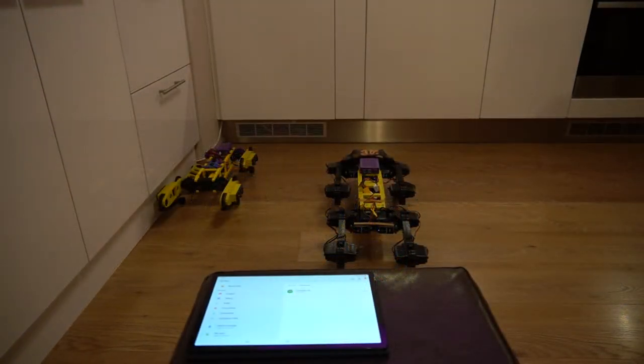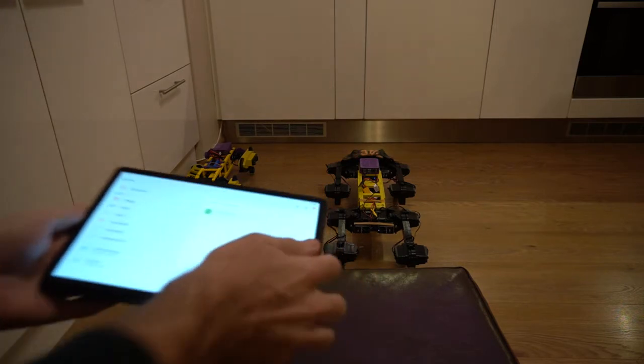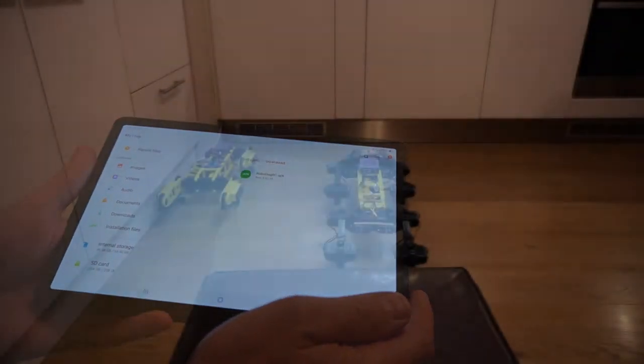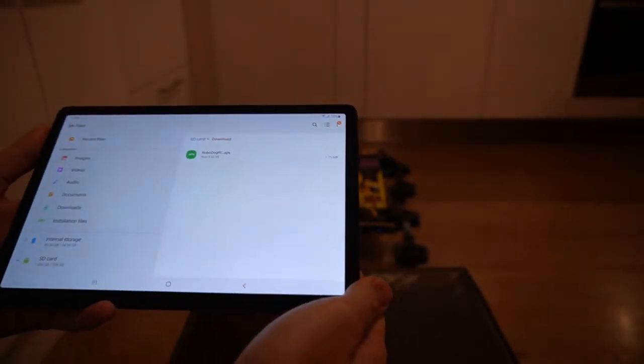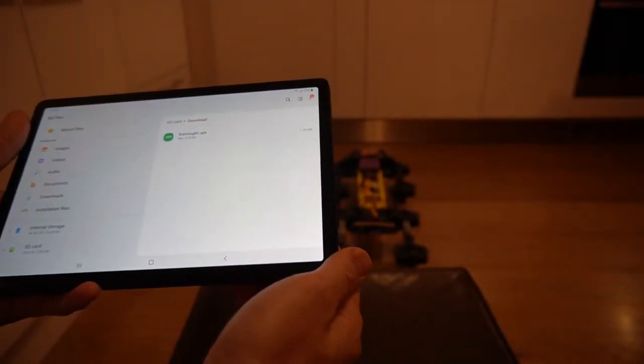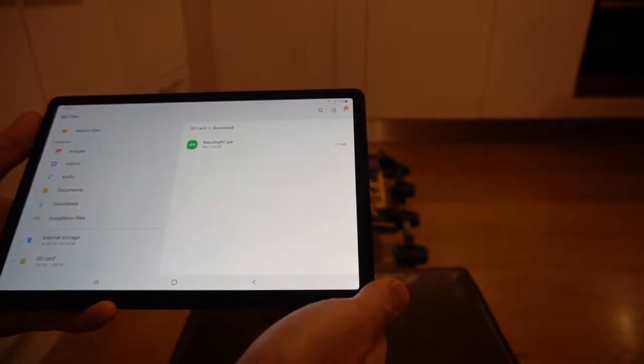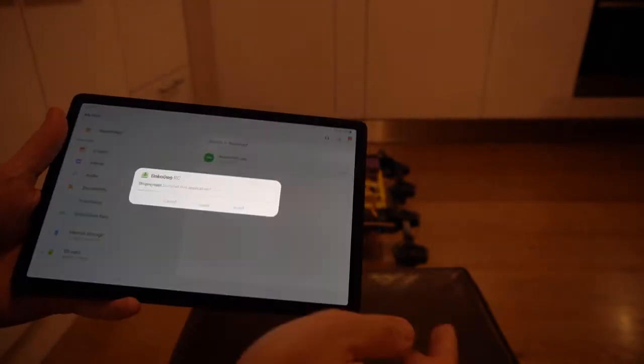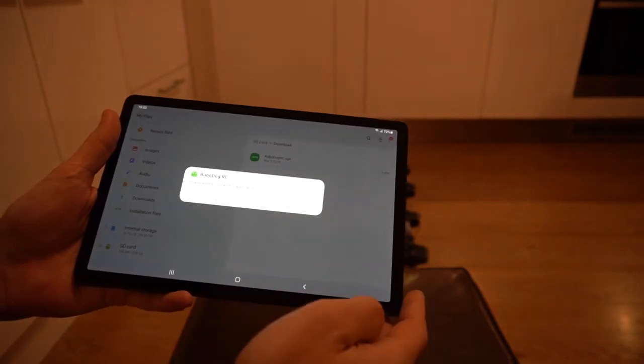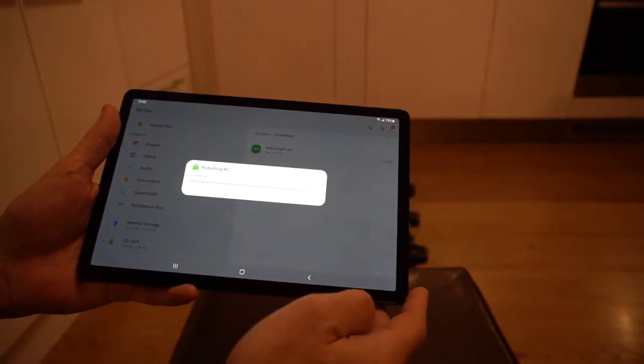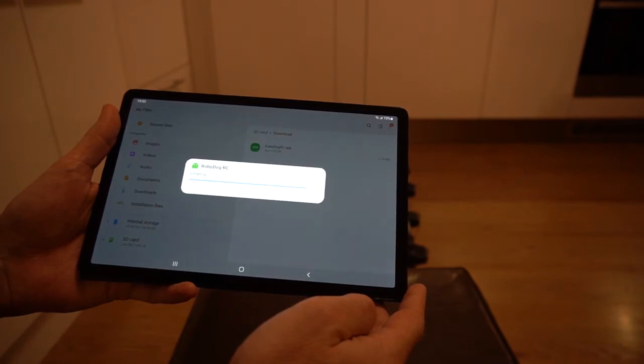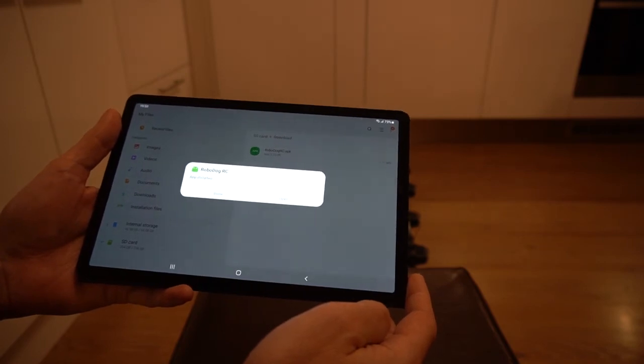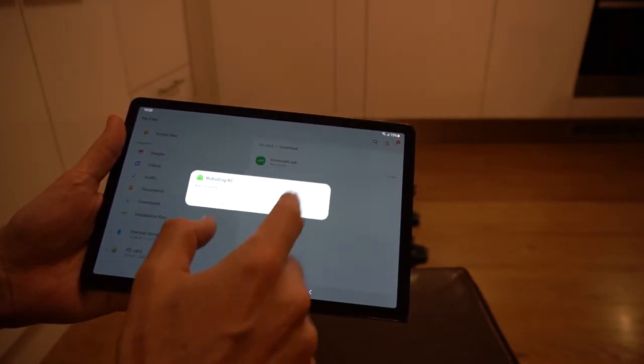Now let's talk about how to install this application, for example on the tablet, and see how it works. The installation file is available on my GitHub. Check the links in video description below. I already downloaded it to the tablet, and now I will install it by clicking on the installation file. Application installed. And now I open it.